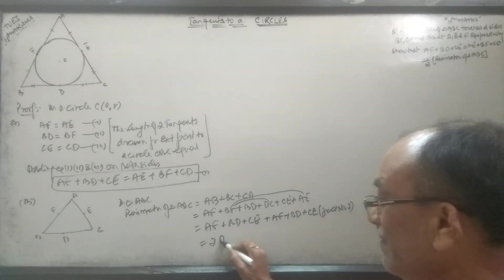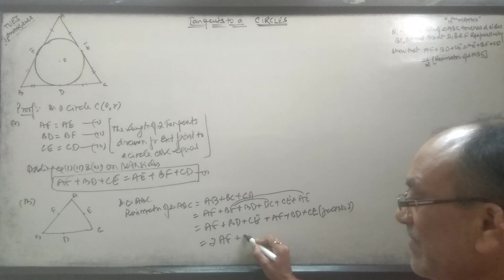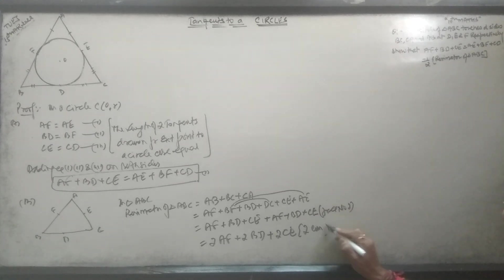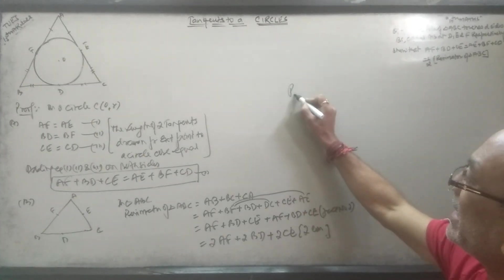We have AF twice, BD twice, and CE twice. Taking 2 common, the perimeter equals 2 times AF plus BD plus CE.